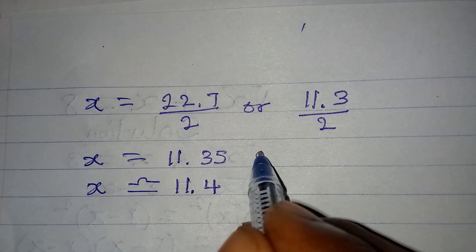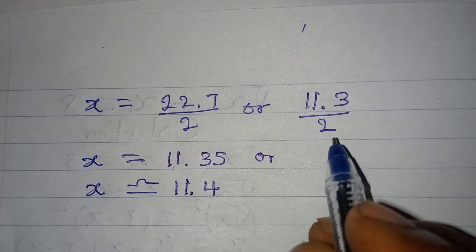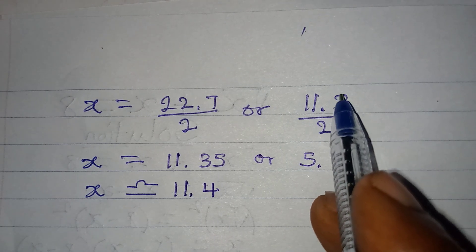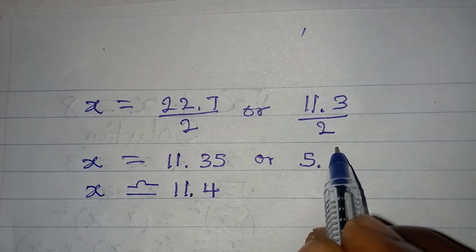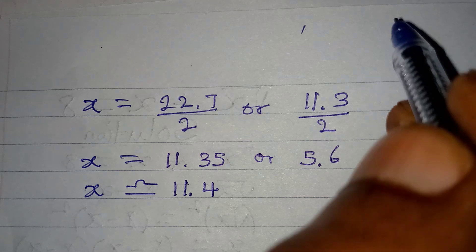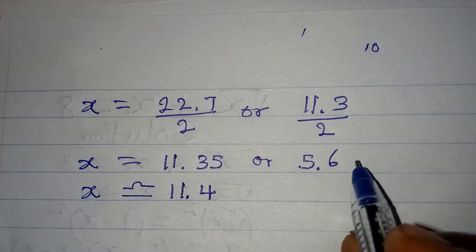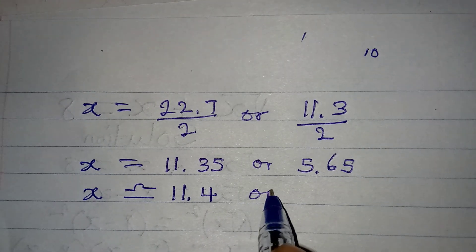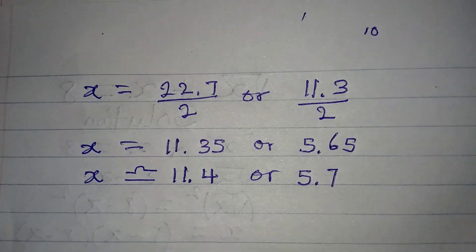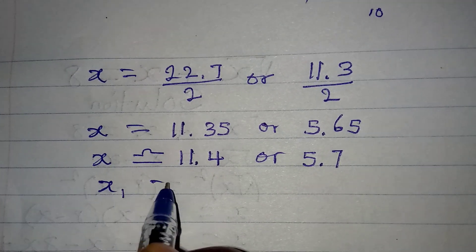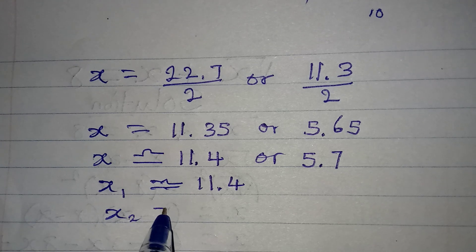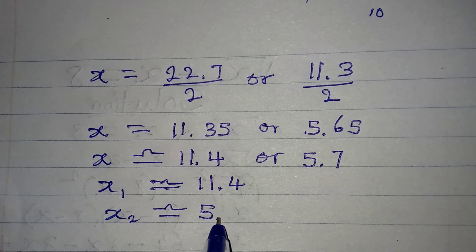Or on this side, 11 divided by 2, that will give 5, there will be a remainder of 1, so I am going to put this, it will cross over to this, as we have 13, 13 divided by 2 will give us 6, there will be a remainder of 1, then add 0 to that, so you have 10, 10 divided by 2 will give 5. So we approximate this to 1 decimal as we have 5.7. So in conclusion, we have our x1 now to be approximately 11.4, and then our x2 to be approximately 5.7.